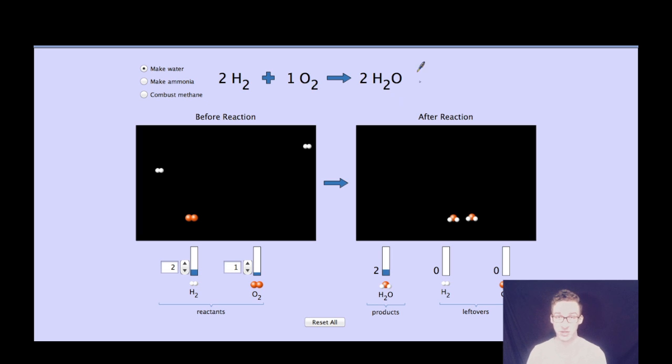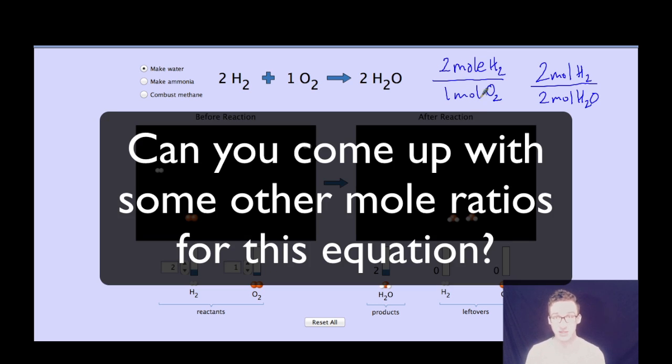So as I go back to my equation that represents the formation of water from its elements, a possible conversion factor that I could write from the mole ratio in this equation would be something like two moles of hydrogen to one mole of oxygen. Or I could write two moles of hydrogen to two moles of water.